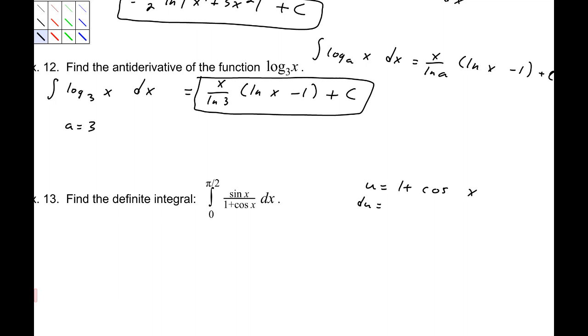Well, then du is negative sine x dx. Well, if you notice, we have a sine x dx right here. So, we can make this negative du equals sine x dx. So, we'll replace sine x dx with negative du. So, negative, which I can factor out, actually, negative du. The sine is taken up with that negative du. So, we have 1 over u. Now, the limits of integration, though, these are going to change because we're going from x's to u's, beginning with pi over 2 and 0.